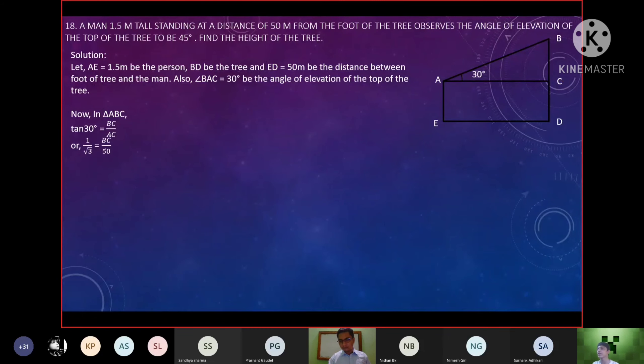We can see the trigonometry use. Here, it is tan 30 degrees equal to BC upon AC. This is the value of 1 upon root 3. Then, BC upon 50.